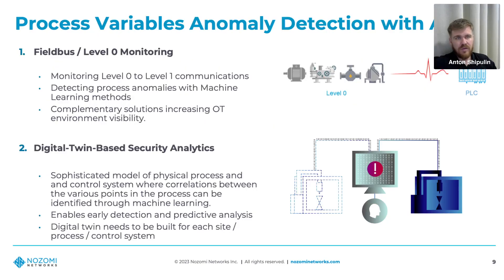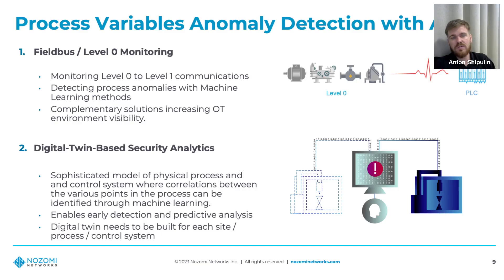Now we move to AI and machine learning applied to OT cybersecurity. OT is different — there are control systems, physical processes, process telemetry data, and process variables, and machine learning helps analyze this data. Two novel solutions are field bus level-zero monitoring — detecting process anomalies with ML — and digital twin-based security analytics, where sophisticated models of physical processes enable early detection and predictive analysis, though digital twins are expensive to build for each site.